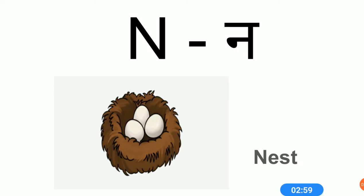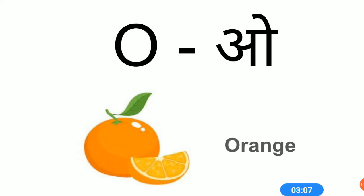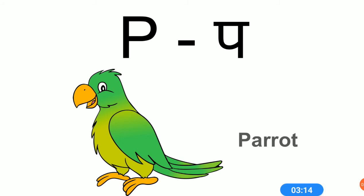N sound is N. N for nest. O sound is O. O for orange. P sound is P. P for parrot.